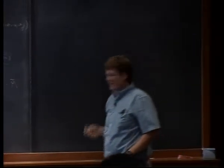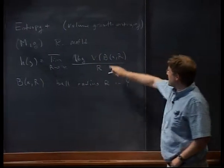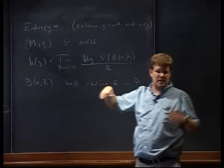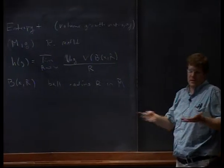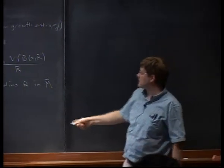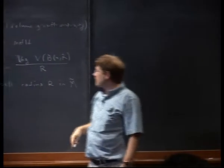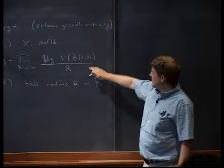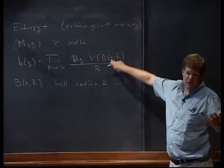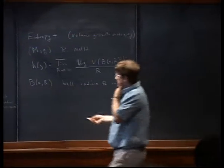So the volume growth entropy is normally defined this way. Notice I take the limsup here, because if it's a co-compact manifold — a manifold with a compact quotient — then I wouldn't need the sup. It's a theorem of Manning and such. This doesn't depend on x, that's the triangle inequality, et cetera. So this is independent of x.